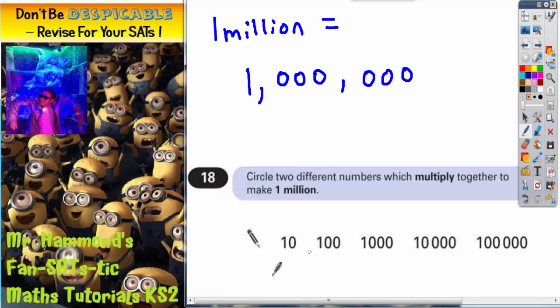So what we need to do now is look at these numbers down at the bottom. Now we know that they all begin with a one and one times one will give you this one here. So what we're interested in now is how to get six zeros.